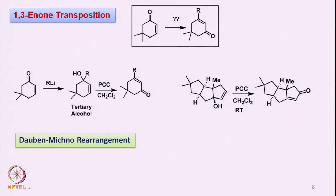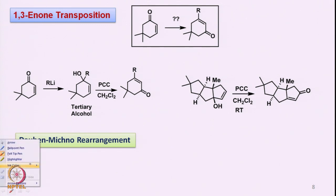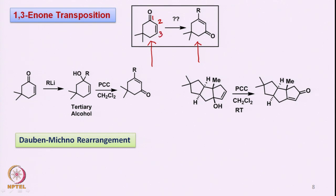Now there is another interesting reaction which is also required many times: how to convert an enone of one type to another enone — this is a 1,3-enone transposition. You have positions 1, 2, and 3, and you have inverted the enone. However, in this particular case it is not a simple 1,3-enone transposition but a 1,3-enone transposition with an addition of an R group.